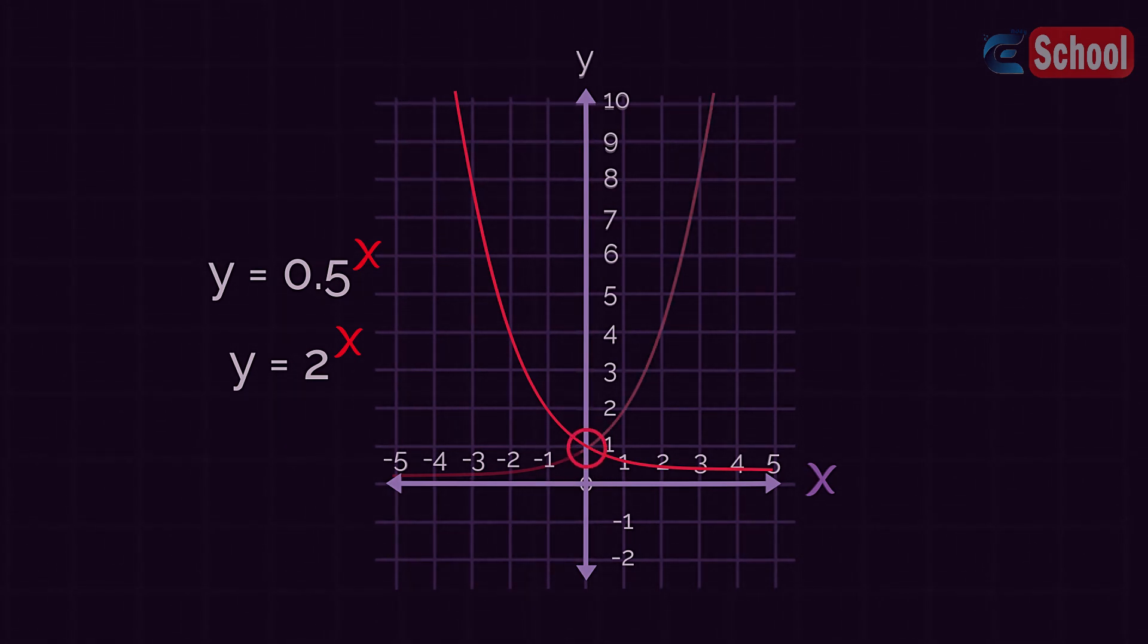Either way they cross through at 0 and 1, and they both get really close to y but never actually cross the x-axis.